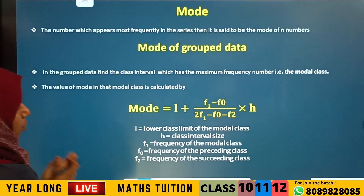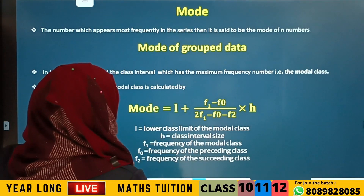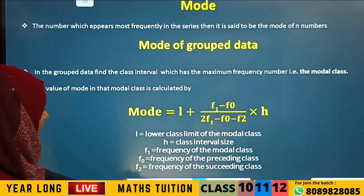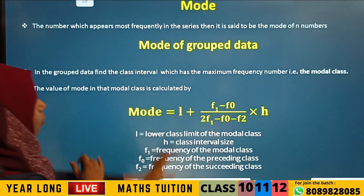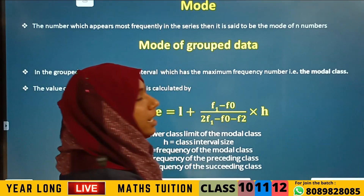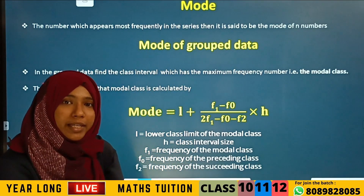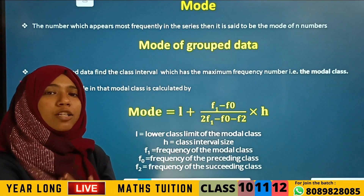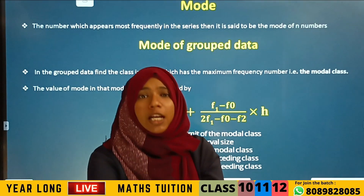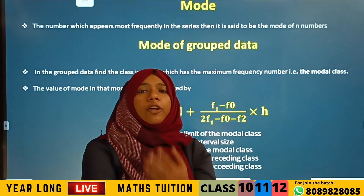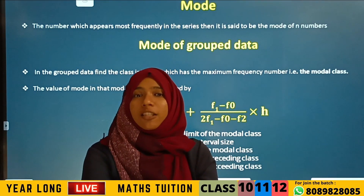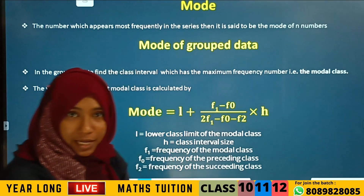So again, what is meant by mode? Mode is the number which appears most frequently in the series. The highest frequency observation is called the mode. The most common value in the dataset is known as mode.